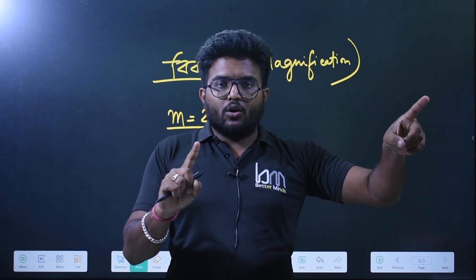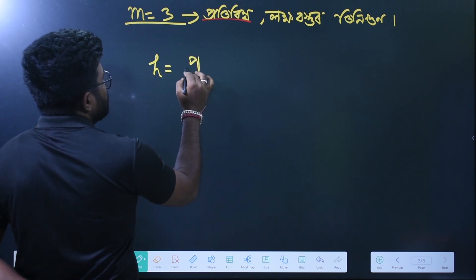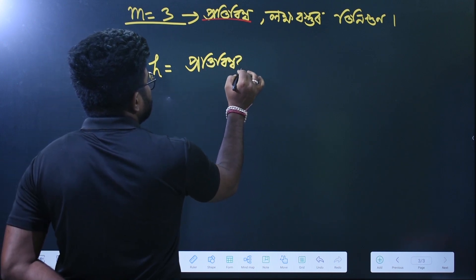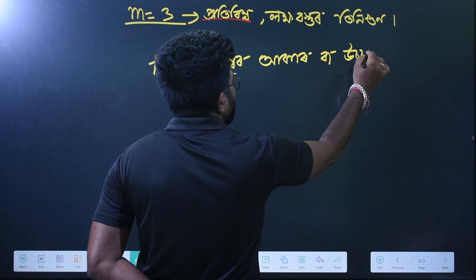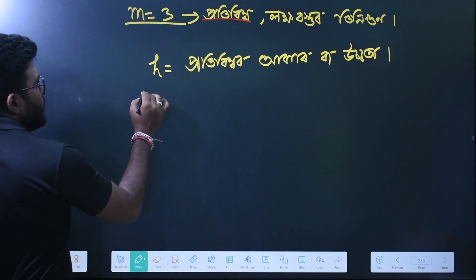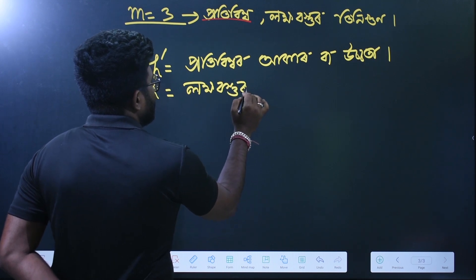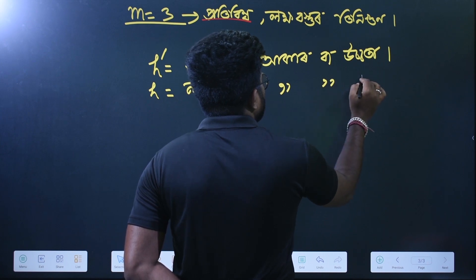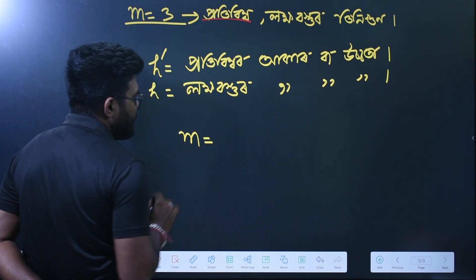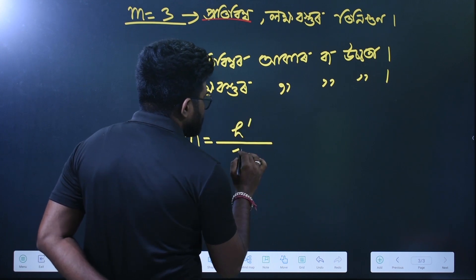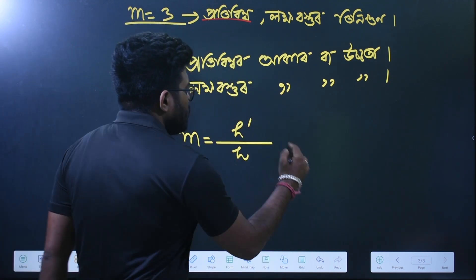M is equal to H dash by H — that is, image height divided by object height. This can also be written as minus V by U. This is the magnification formula for a lens.